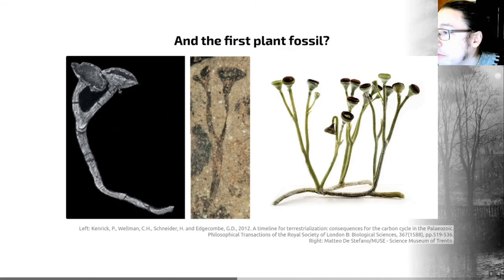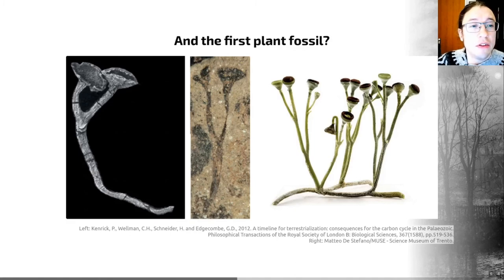Cooksonia is shown as a fossil on the left here and is reconstructed on the right here. This is a leafless branched plant body with sporangia at the end of each branch tip. So it was a maximum of 6.5 centimeters tall and it lived in swampy areas we think.